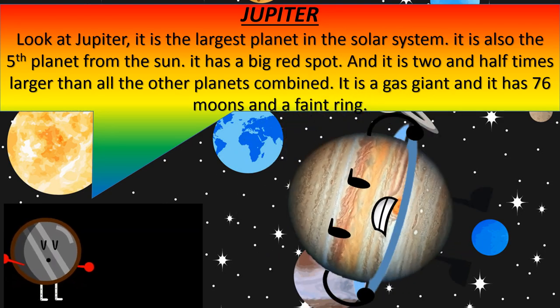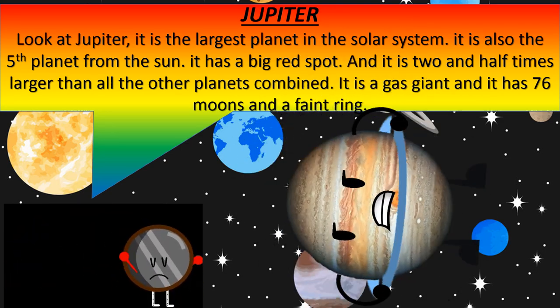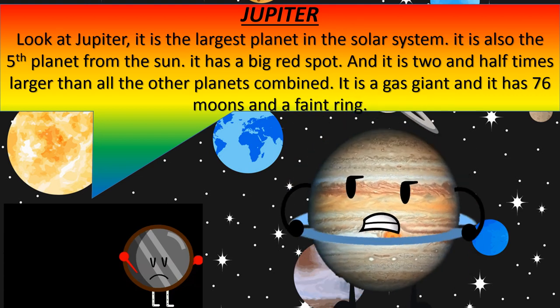Jupiter. Look at Jupiter. It is the largest planet in the solar system and also the fifth planet from the sun. It has a big red spot and it is two and a half times larger than all the other planets combined. It is a gas giant and it has 76 moons and a faint ring.